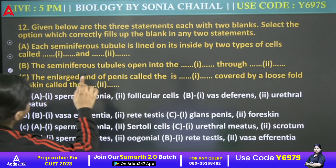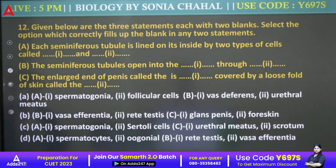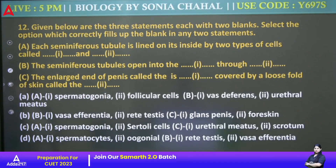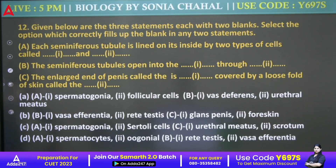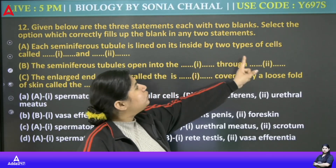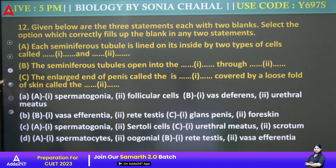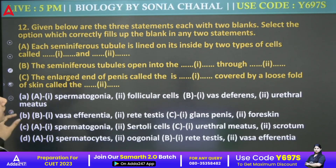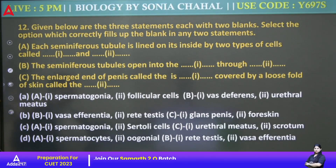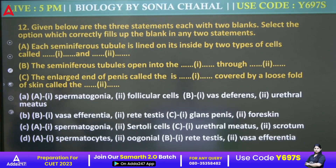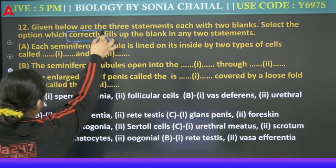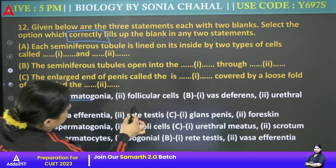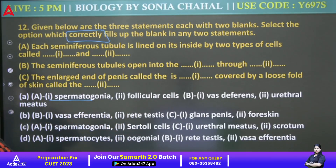Next: Fill in the blanks by selecting the correct option. Each seminiferous tubule is lined on its inside by two types of cells — one is spermatogonia and one is Sertoli cell. Then it says: seminiferous tubule opens into dash through dash — vasa efferentia through rete testis. The next blank about glans penis and prepuce — that is also correct.